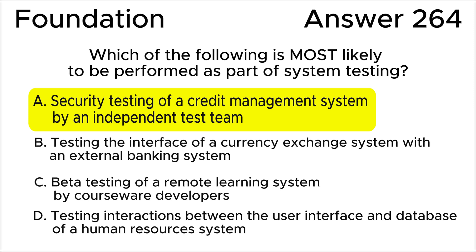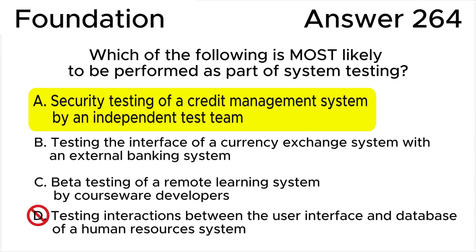All the other answers are wrong. Answer B is not correct because system integration testing examines the interfaces with other systems and external services — not system testing. Answer C is not correct because beta testing is a type of acceptance testing performed at an external site by roles outside the development organization — not system testing.